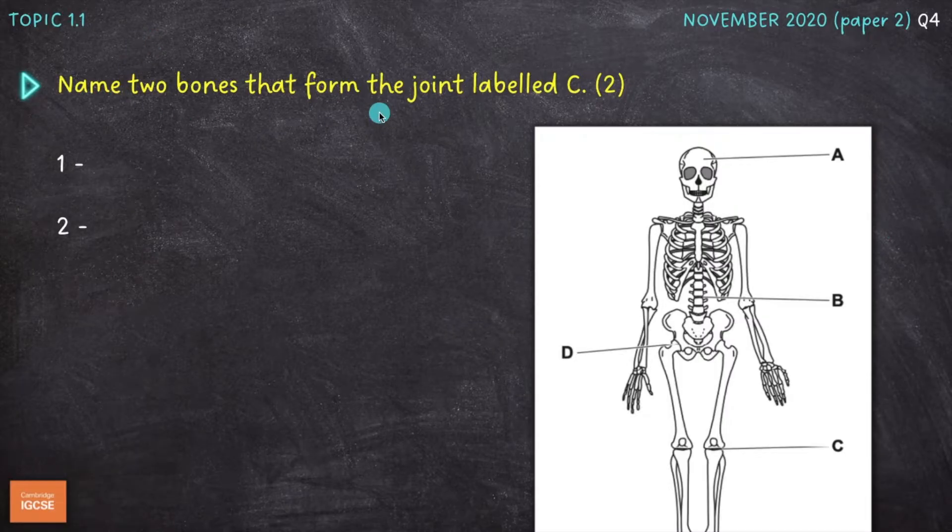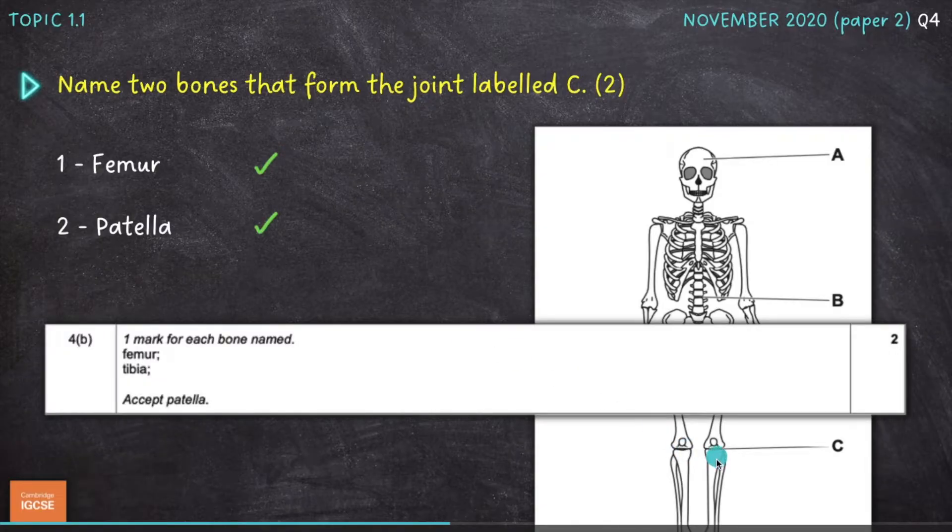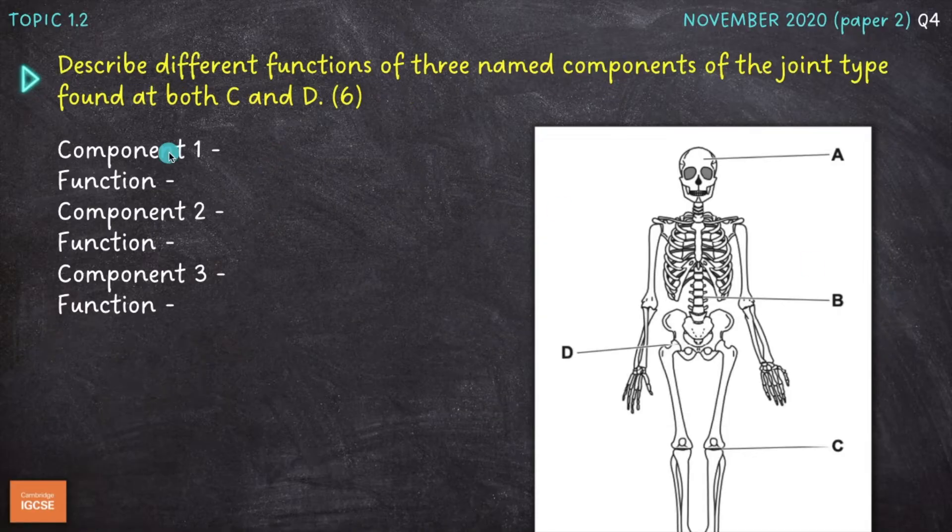Name two bones that form the joint labelled C. So we've got the knee joint here. We need to name two of the three bones that make up that joint. And I've gone for the femur or thigh bone here and the patella, which is the kneecap. But we could have also gone for the tibia, which is the largest bone in the lower leg there. Please note that the fibula, the smaller bone that runs alongside the tibia, would not have got you a mark because it sits just beneath the head of the tibia and doesn't actually articulate at the knee joint.